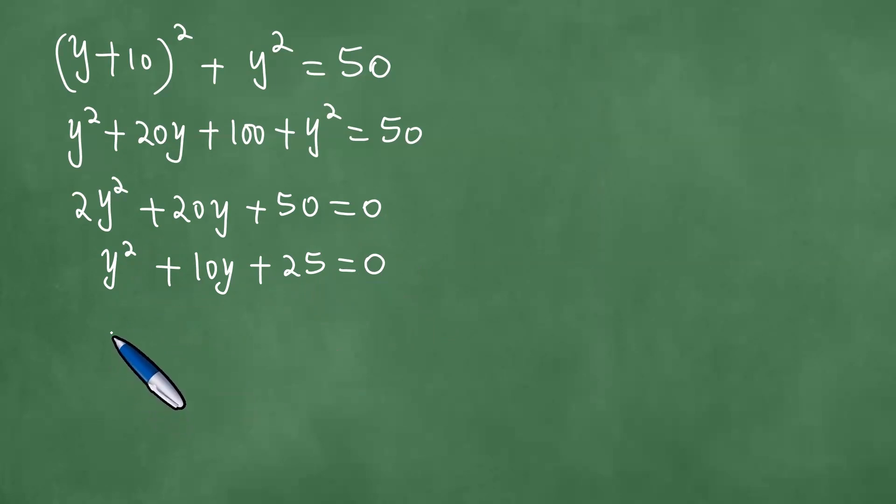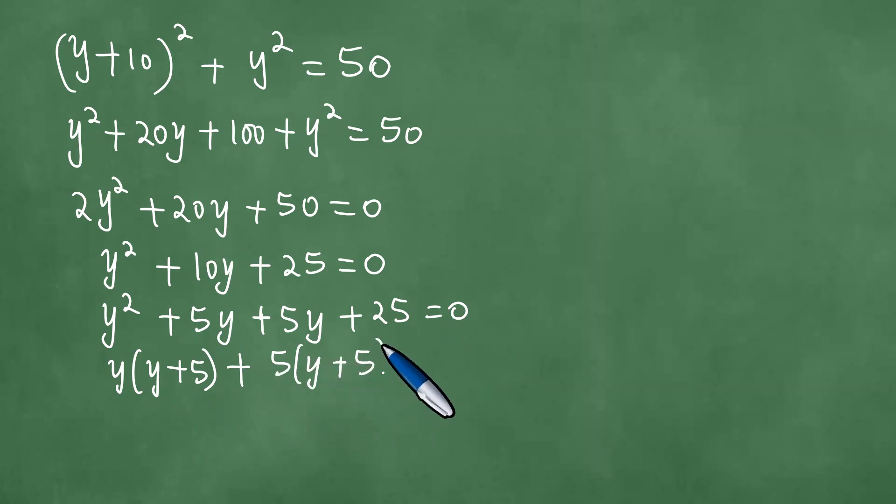We multiply y squared and 25, getting 25y squared. We look for two expressions whose product is 25y squared but whose sum is 10y, and those are 5y and 5y. Factoring gives us y times y plus 5 plus 5 times y plus 5 equals 0, which is y plus 5 times y plus 5 equals 0.